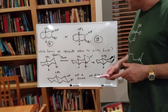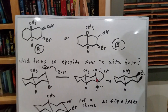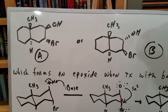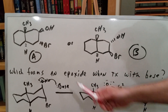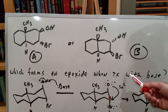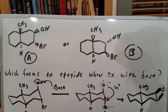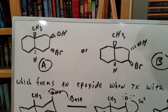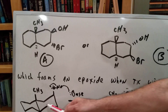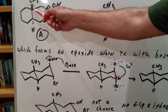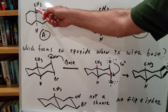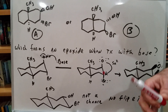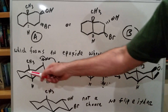If you look at what I have here, we have two molecules that are isomeric — one I call A and one I call B. What I want to know is which one of these forms an epoxide when treated with base. The first thing you do whenever you see two six-membered rings is to put them in the chair form. I drew the chair form like this because if you look at this ring junction, one's going up and one's going down.